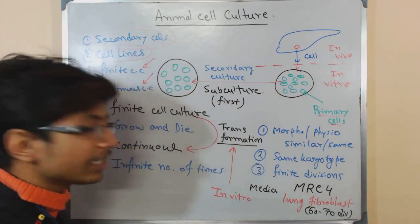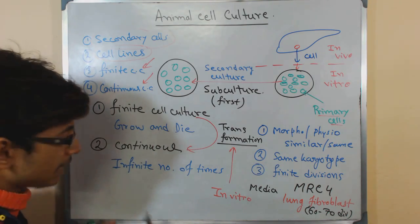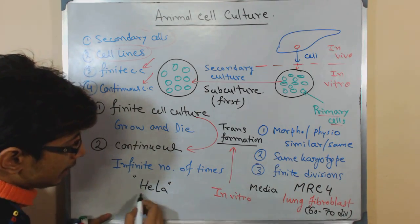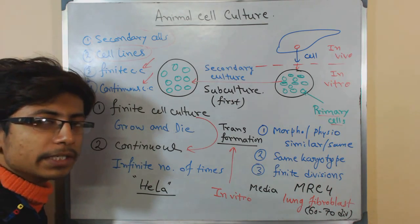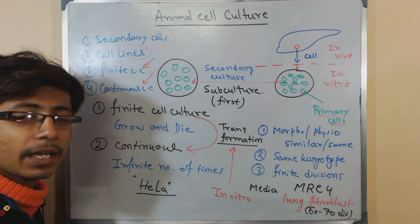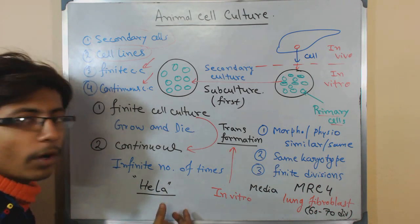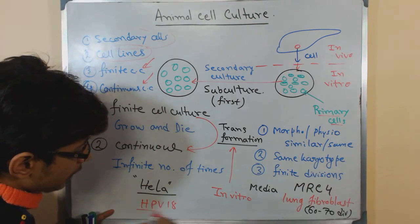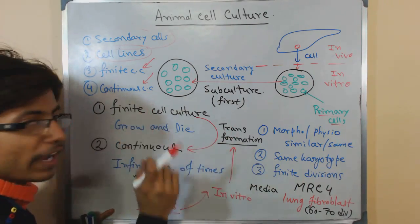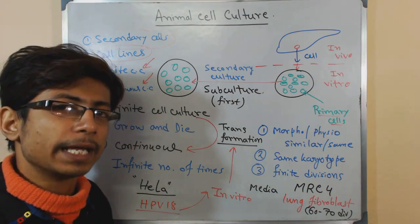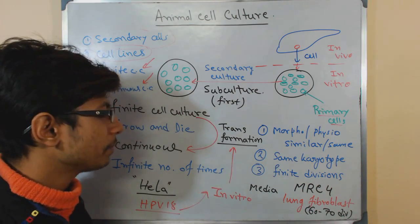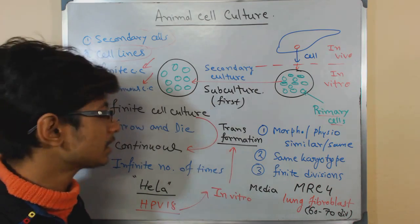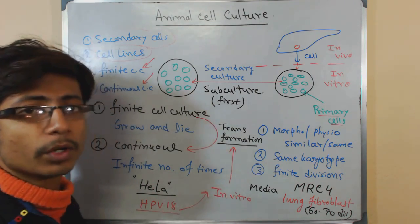HeLa is the cell coming from Henrietta Lacks, who had a fatal cervical cancer. HeLa is a continuous or infinite cell line that is continuously growing and dividing when we provide the medium. This cell is the epithelial cell of the cervix, and it was transformed into a continuous cell type by Human Papillomavirus 18 (HPV-18) infection, which turned the cell from a finite to an infinite cell line. We are now dealing with and researching HeLa cells a lot because they have all the features required for cell culture and grow very fast with rare contamination chances and easy handling.